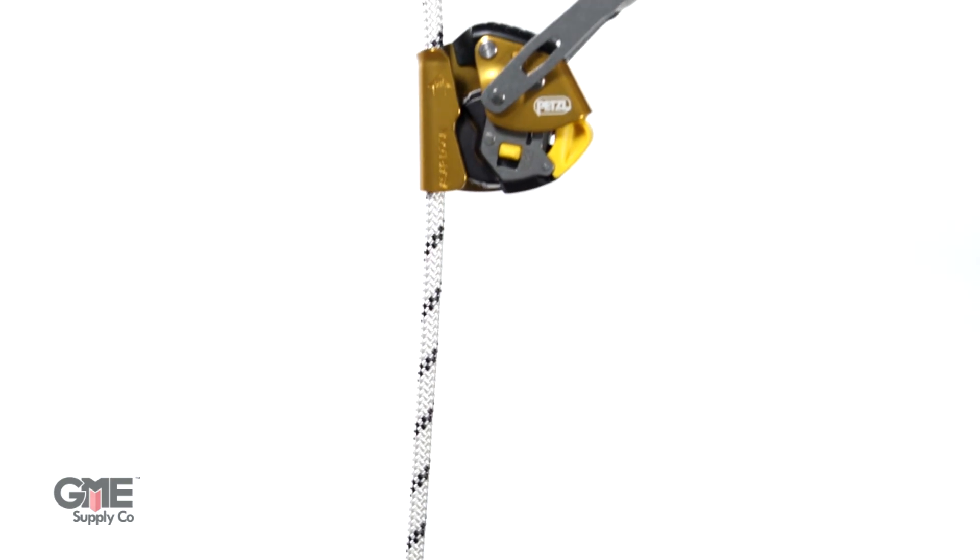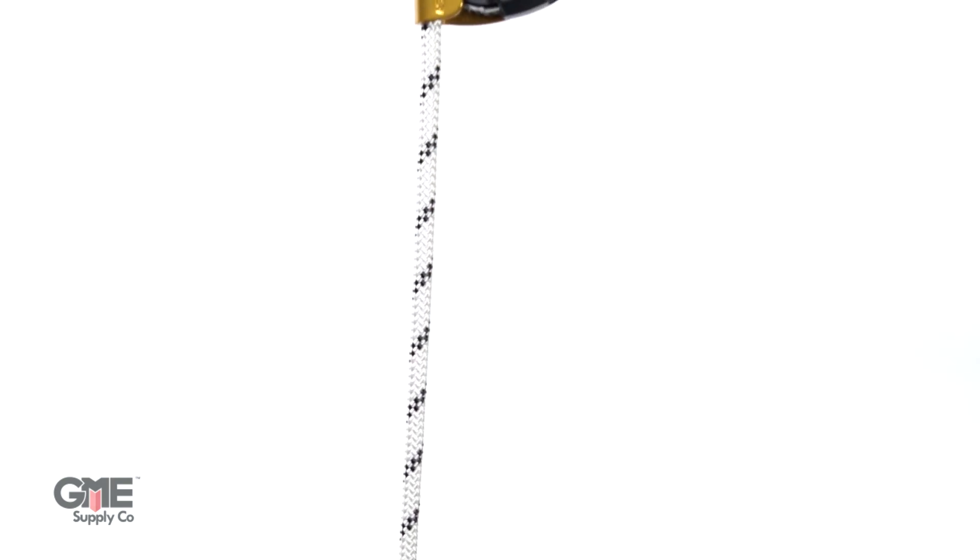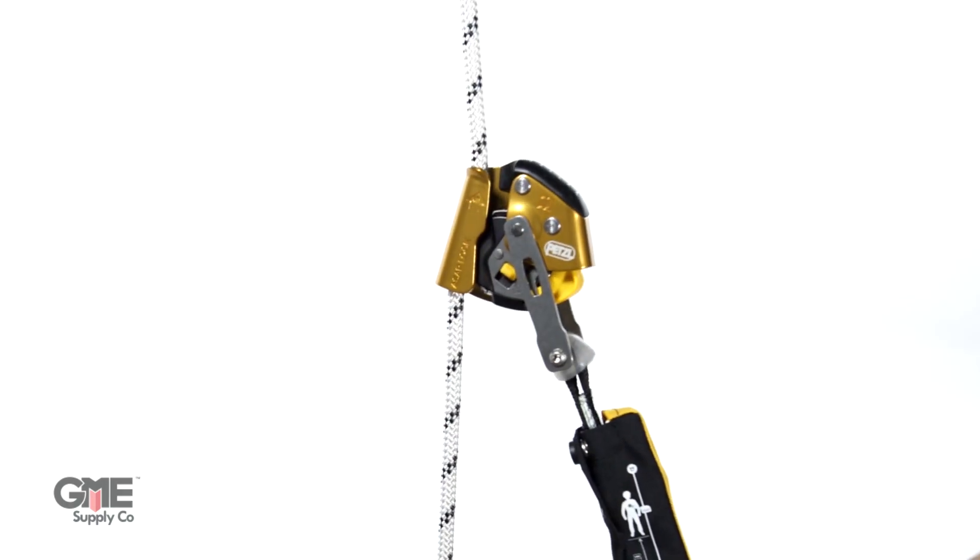It's designed to move freely up and down a lifeline as you work. However, in the instance of a fall, it immediately locks onto the lifeline and stops the user from falling any further.